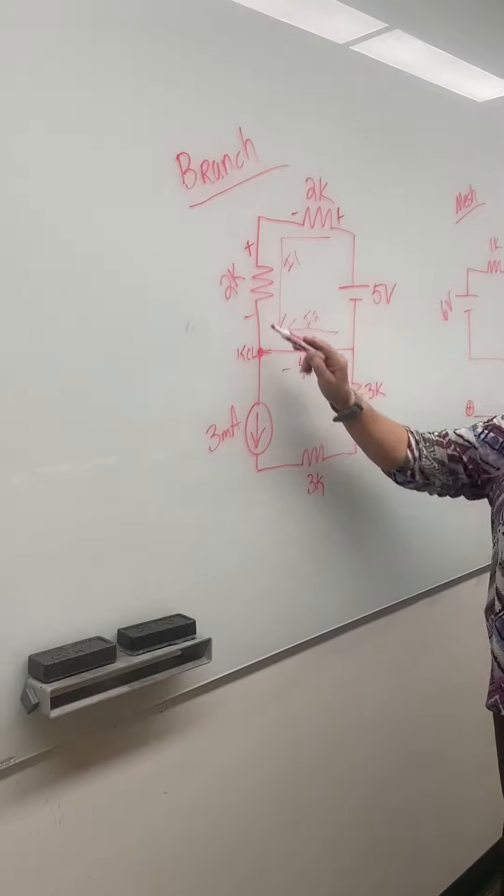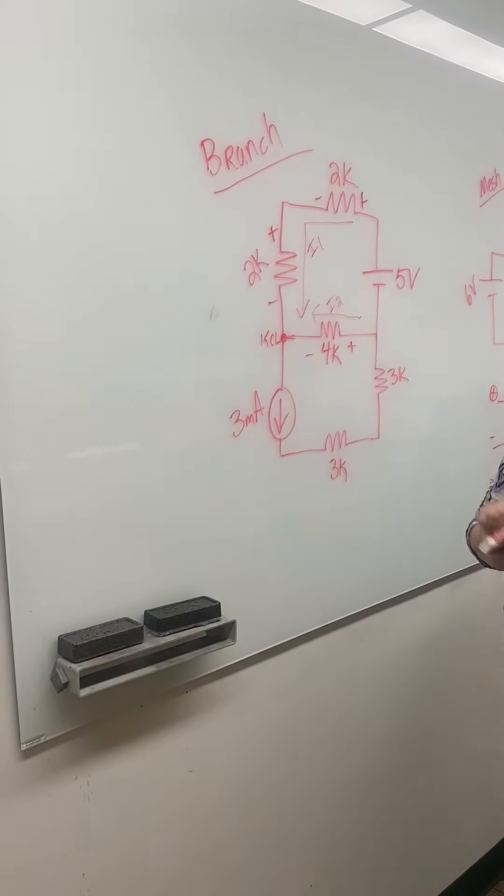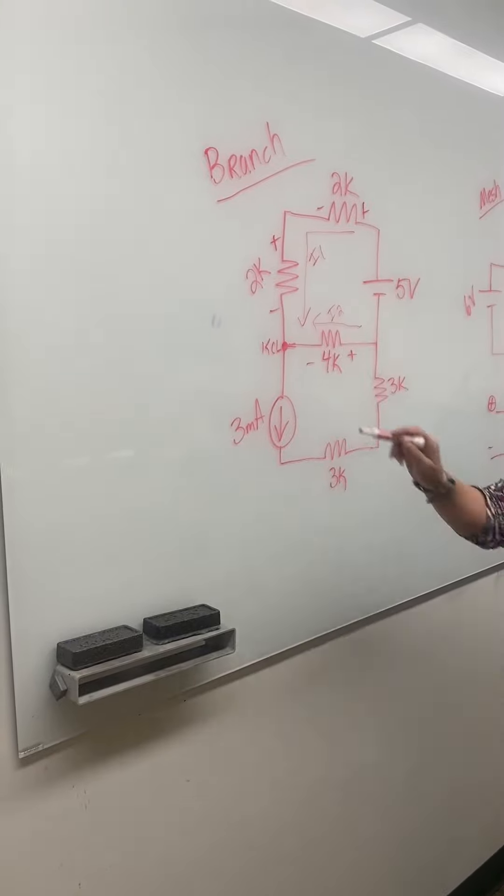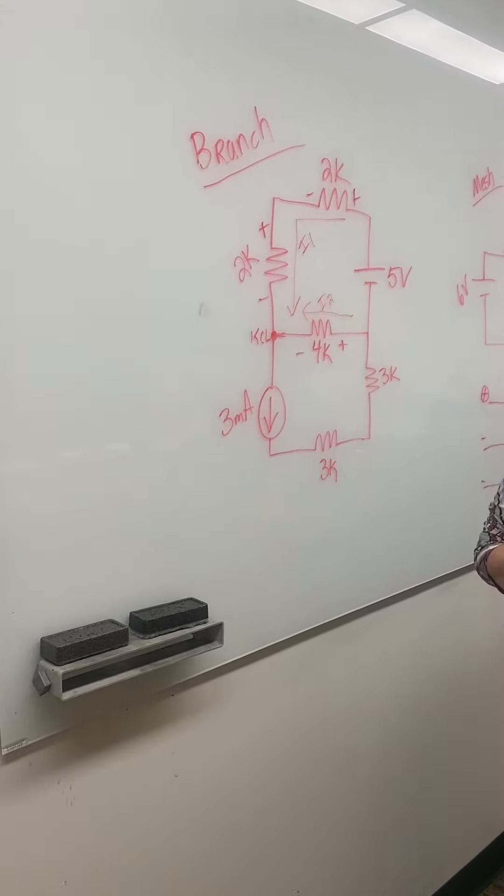I can write a KVL here, but I cannot write a KVL if there's a current source in the path. So that's why I can write one KVL, and then I can write one KCL.